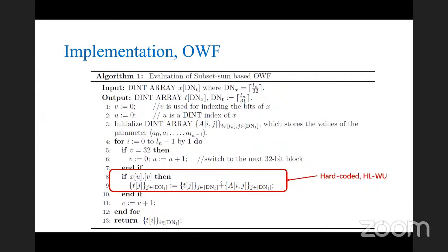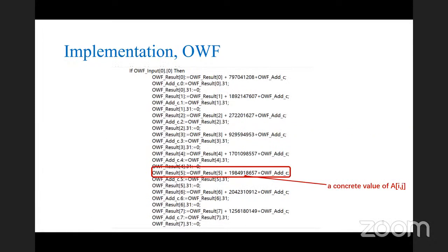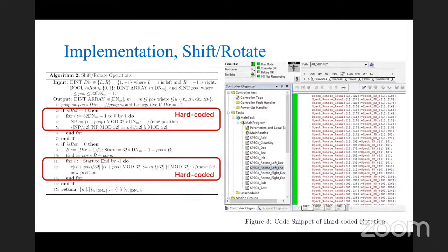Since LN is not small, we adapt hard-coding to hard-code the core statements involving a_i. Note that we can't use loop statements anymore due to the hard-coding of A. We use Python to pre-generate those concrete hard-coded statements. We use a similar idea to realize shift-register functionalities — the left figure is the pseudo code for hard-coding and the right figure is the resulting ST codes.